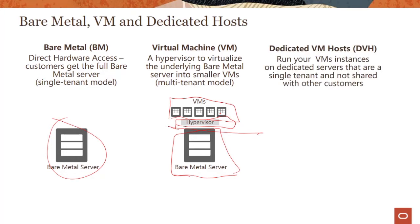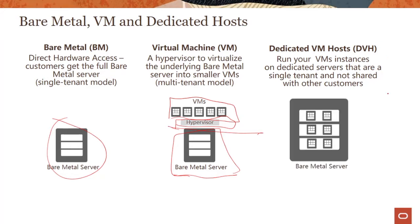The third model, which we launched recently, is called the dedicated VM host or DVH. In a dedicated VM host, you can run your VM instances on dedicated servers that are single tenant and not shared with other customers. You get the bare metal machine, and then on top of that you run virtual machines. It's a little different from bare metal because here you get the single tenant model and also the ability to run VMs on top of that. With bare metal, you have to manage and install your own hypervisor, giving more flexibility but extra work. With dedicated VM host, we do that extra work for you.